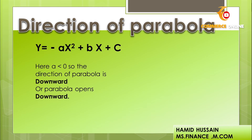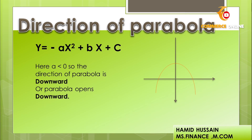Here, A is less than 0 because of the minus sign. The direction of the parabola is downward, and the parabola opens downward. You can see on the graph that the direction is downward.